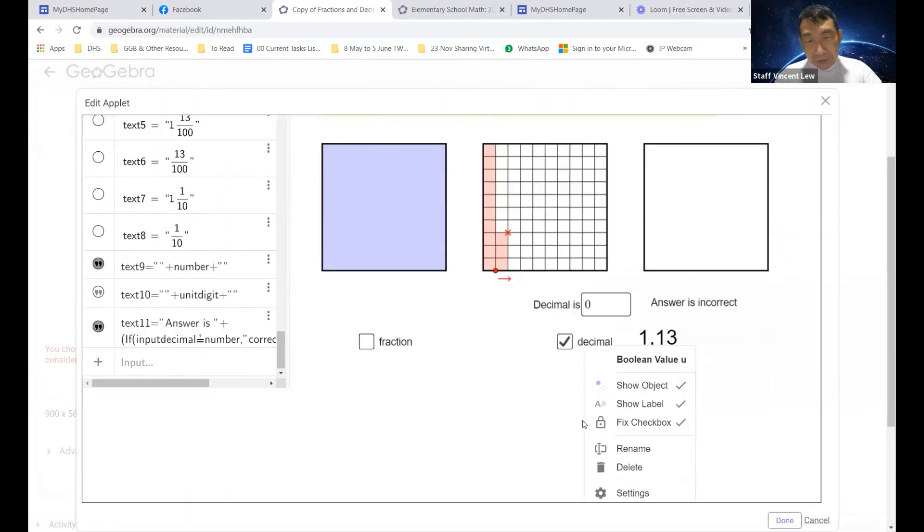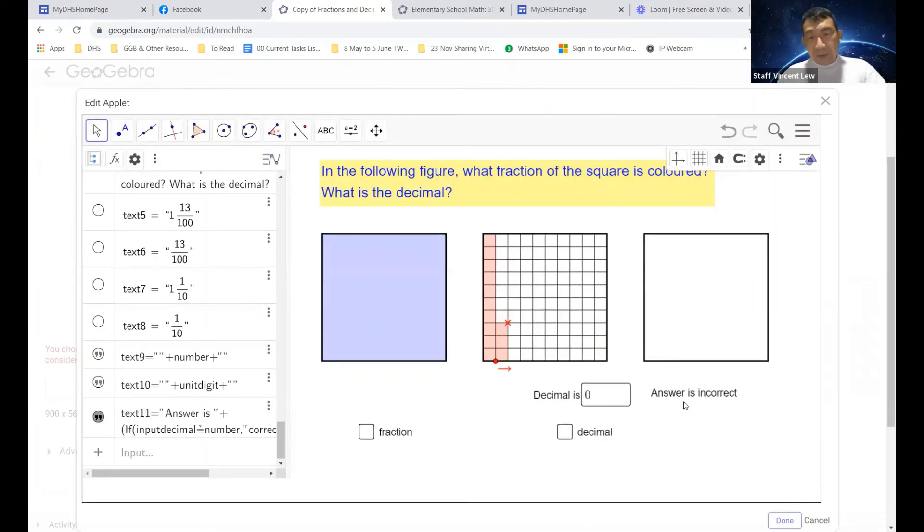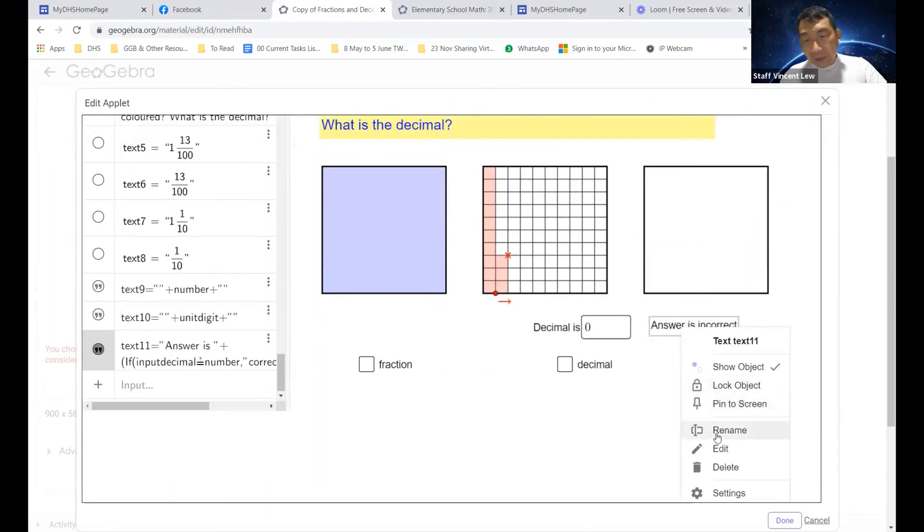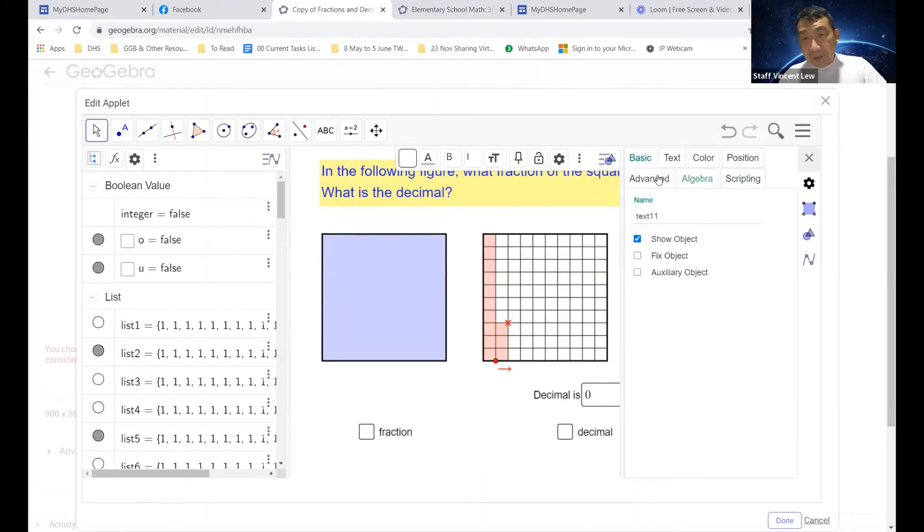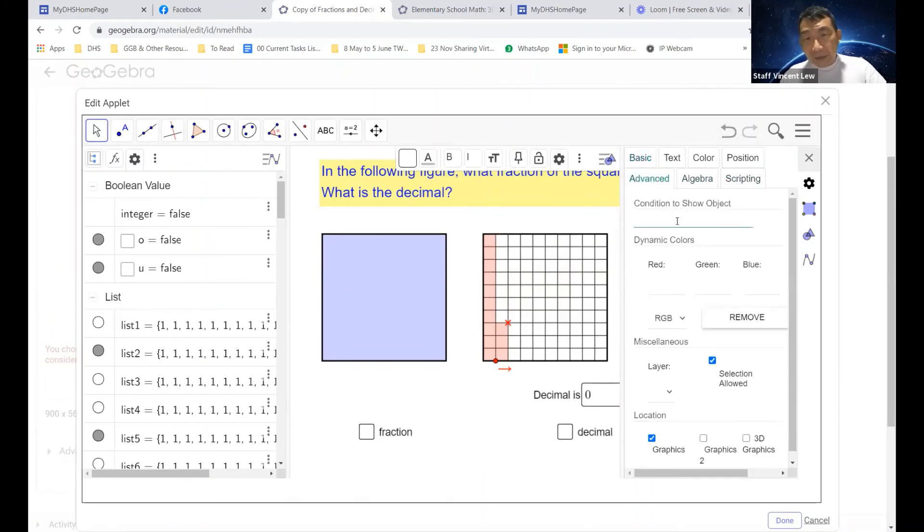We're going to check, what's this text? What is this check box? Okay, the boolean value is U. So in other words, I'm also going to let the text box disappear just like the system's answer. I'm going to right click under the settings. Under advanced, in the advanced, the condition will show object. Just now the variable was called U. So I'm going to just press enter. U.